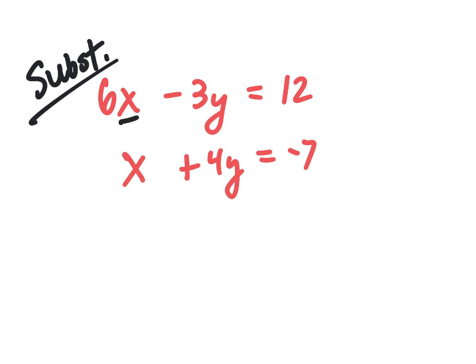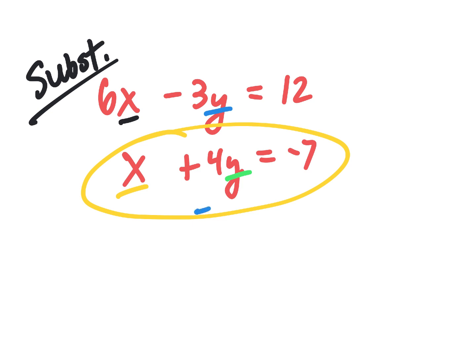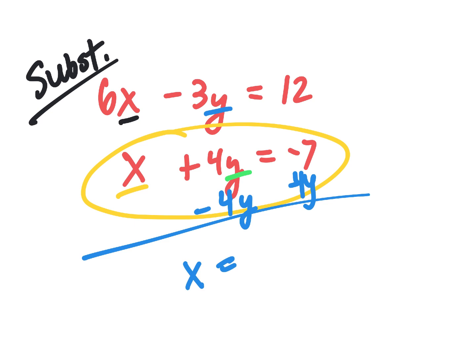If I have to use substitution, I need to substitute one thing into the other equation. You look for what we described as the lonely variable — what's the easiest thing to solve for? This x, this y, this y, or this x. One of them is the easiest to solve. Mateo, what do you say? We solve for the yellow one, the x that's all alone there. I subtracted 4y from both sides and x is equal to negative 4y minus 7.